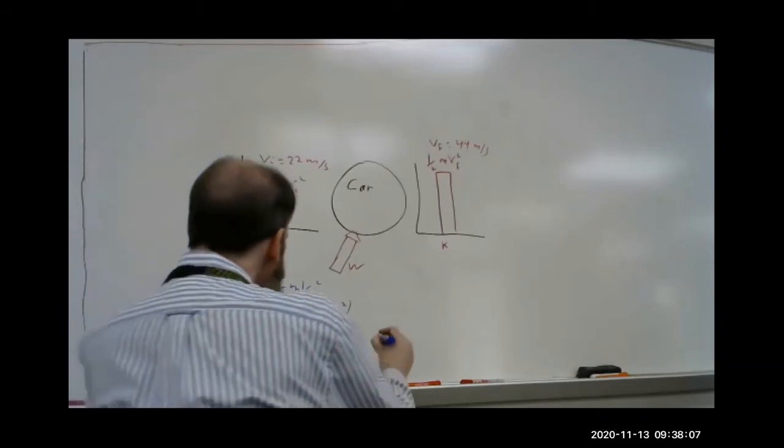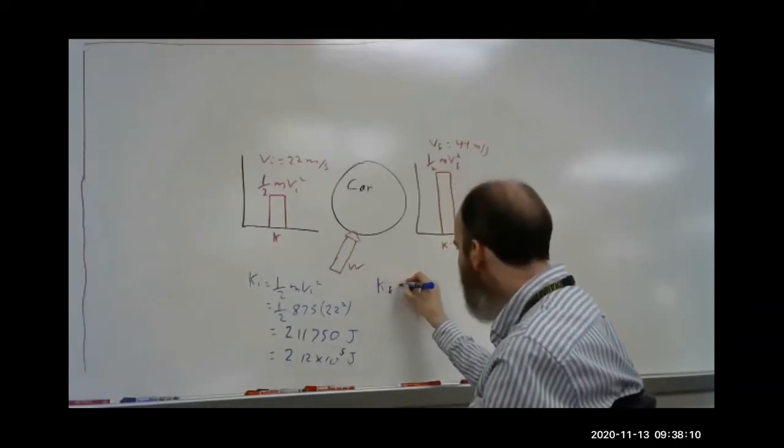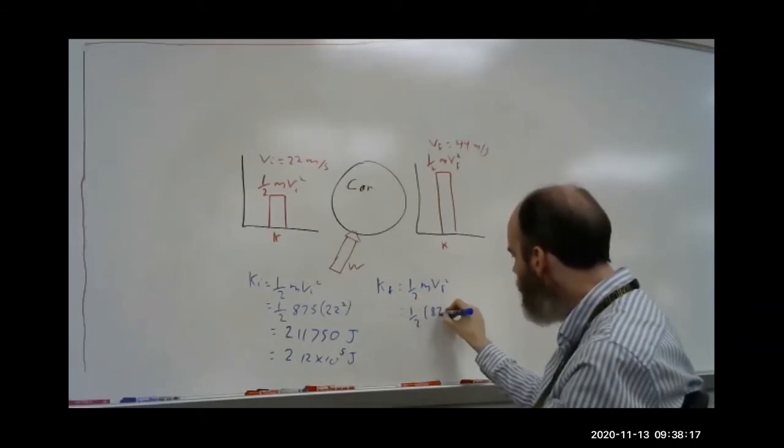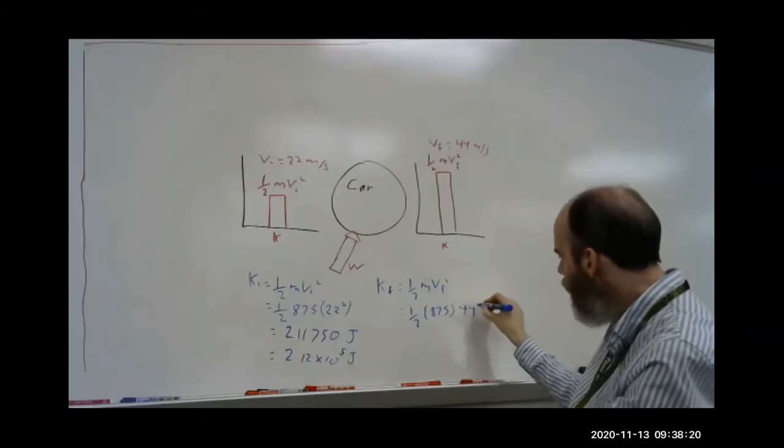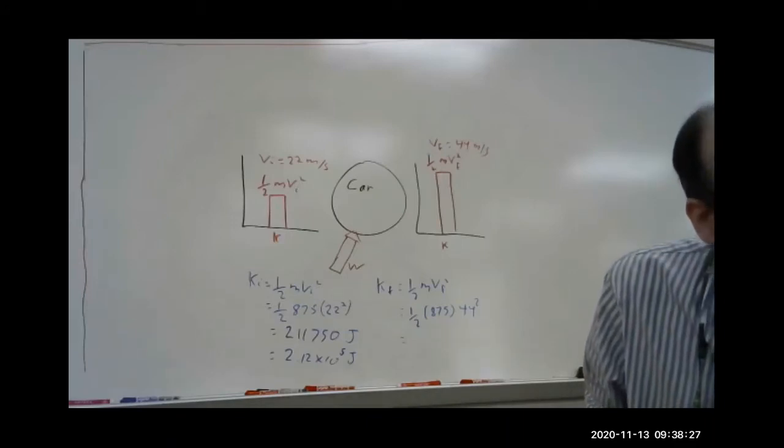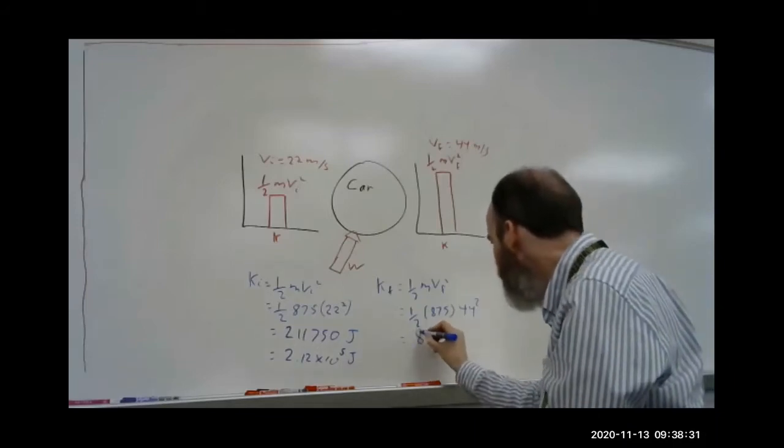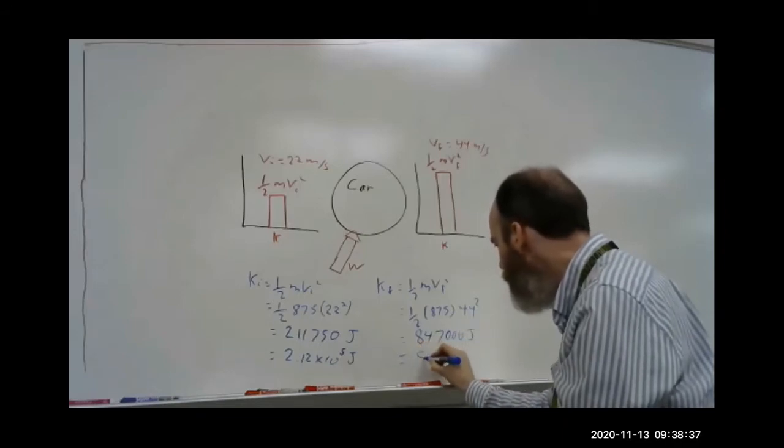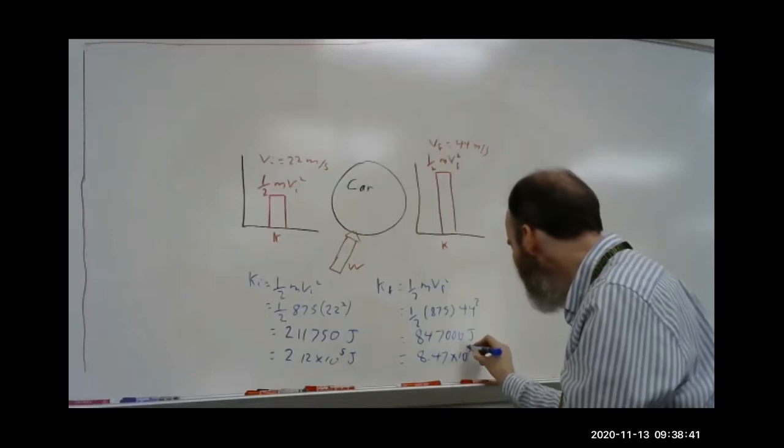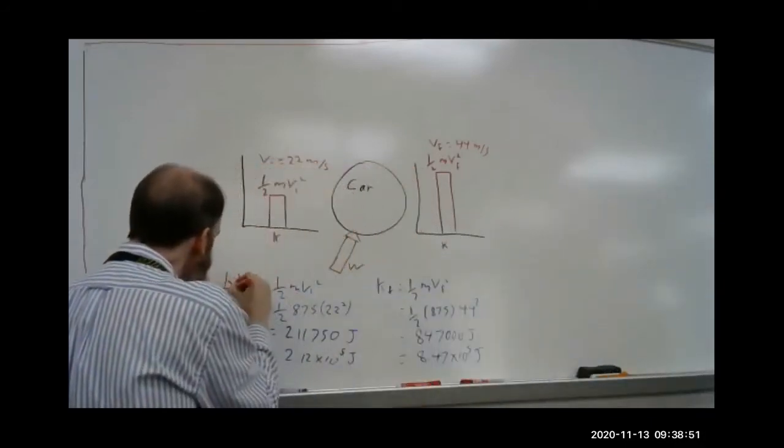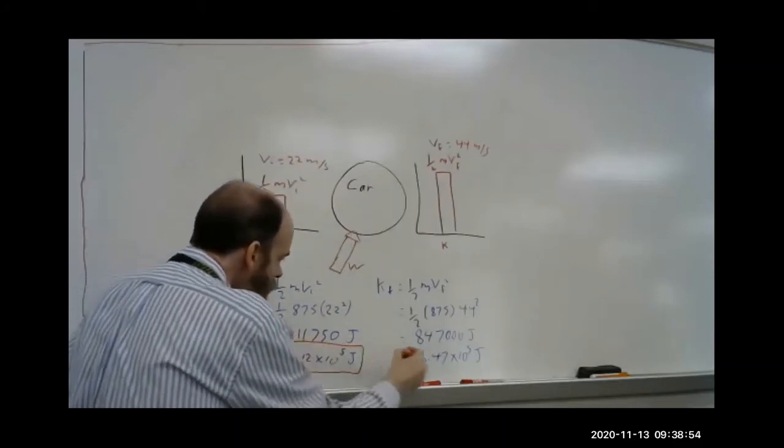Okay, the final kinetic energy. K final is one half m v final squared, which is one half times 875 times 44 squared. And that becomes 847,000 joules, or 8.47 times 10 to the 5th joules. So that's the answer to part B. Those are the two answers to part B.